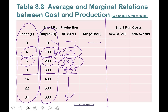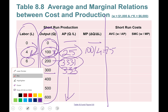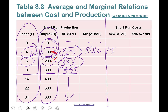Marginal product is change in quantity divided by change in labor. From 0 to 100 output, divided by 4 workers, that's 25. Next: from 100 to 200 output, and from 4 to 6 workers — increase in quantity is 100, so 100 divided by 2 equals 50. So you have marginal product of 25 and then 50, and you can calculate the rest.